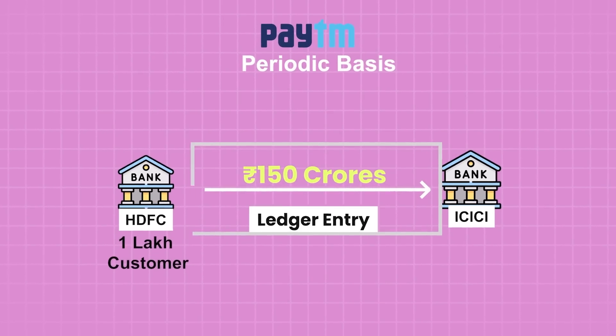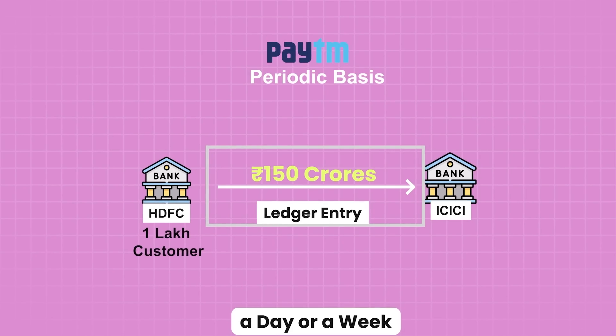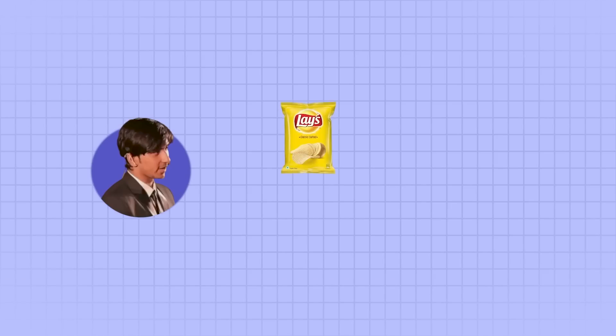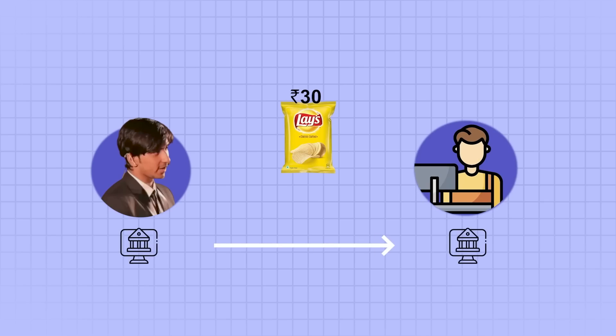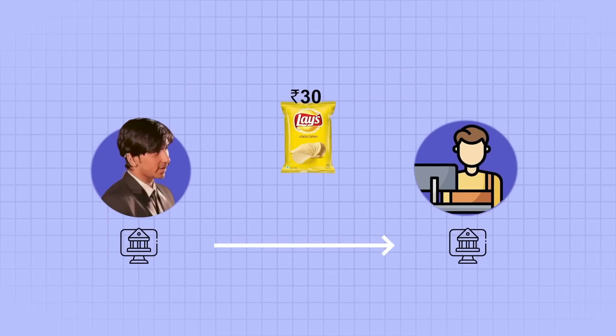Although the ledger entry of the transaction happens instantly, the actual transaction takes a day or a week to be executed. Now with the central bank issued digital rupee, when I buy chips worth 30 rupees from my account in the RBI, the money will directly go to the grocery owner's bank account with the RBI. Both the front and back end transactions take place almost immediately and simultaneously, and the transaction is recorded in the RBI's ledger. So just like cash, the money gets transferred from me to the shopkeeper — it's just that the same transaction happens in the digital format.